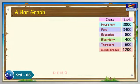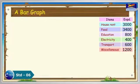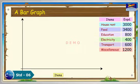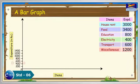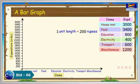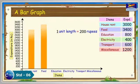To represent this data in the form of a bar diagram, here are the steps. Draw two perpendicular lines, one vertical and one horizontal. Along the horizontal line, mark the items and along the vertical line, mark the corresponding expenditure. Take bars of the same width, keeping a uniform gap between them. Choose a suitable scale along the vertical line — let one unit length equal 200 rupees — and then mark the corresponding values.